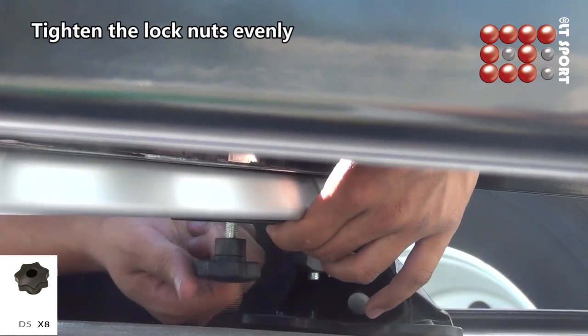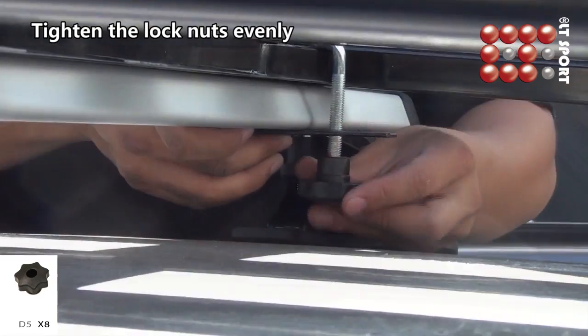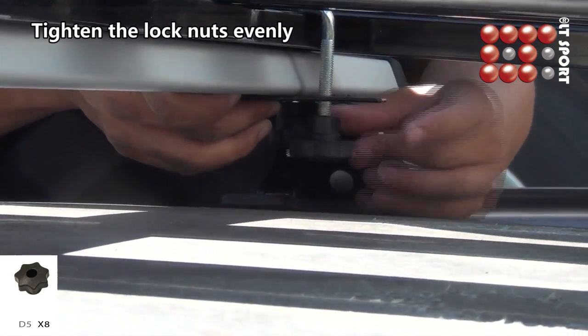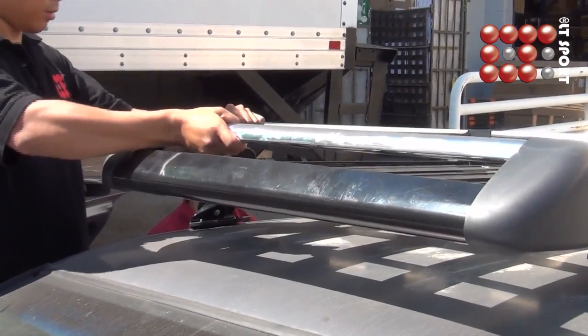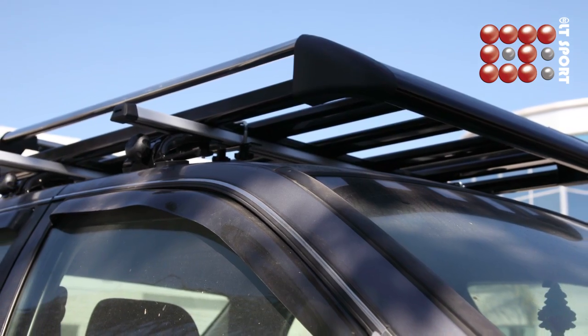Third, put the lock nut on. Always tighten it evenly for best results. After everything's installed properly, yank the rack and make sure it's secure on the vehicle.